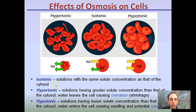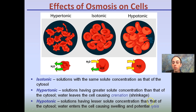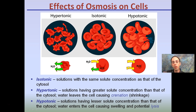The opposite of that would be hypotonic. This is where solutions have lesser solute concentration than that of the cytosol. Water enters the cell causing it to swell, and potentially lyse — in this case the cell is lysing, or exploding, basically breaking apart. Too much water is coming into the cell causing it to swell up, making it look more plump and causing it to lyse or break apart.